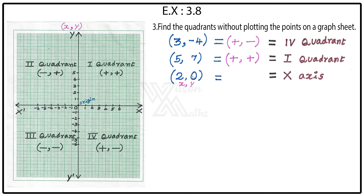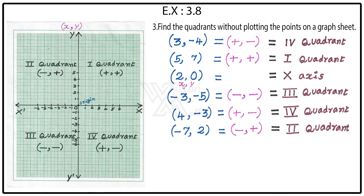If the y value is zero, then it is on the x-axis. Next, the fourth point: minus 3 comma minus 5. The first value is negative, the second is also negative, so minus comma minus. See here — minus comma minus falls in the third quadrant.